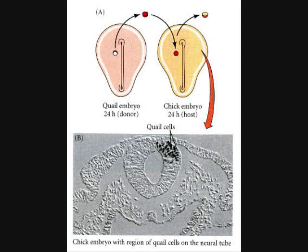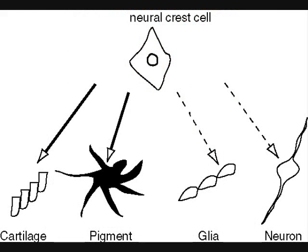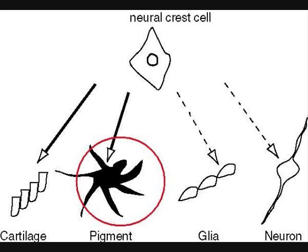Neural crest cells? What are those? They are a type of cell which, among other things, become your melanocytes, or the cells that give your skin its color.